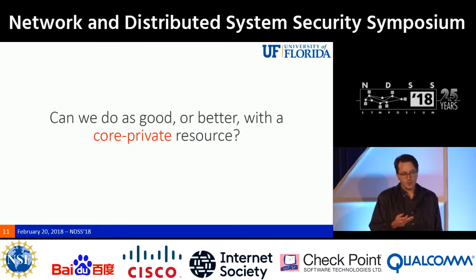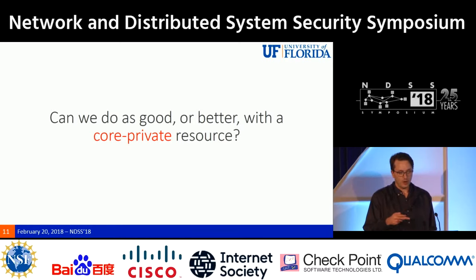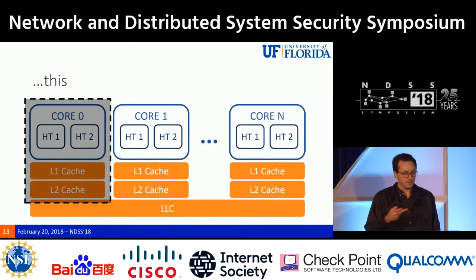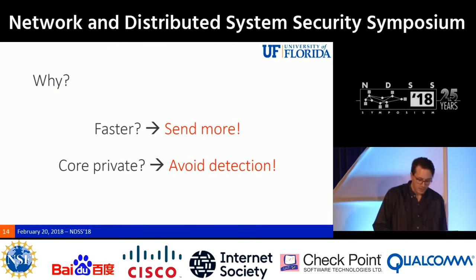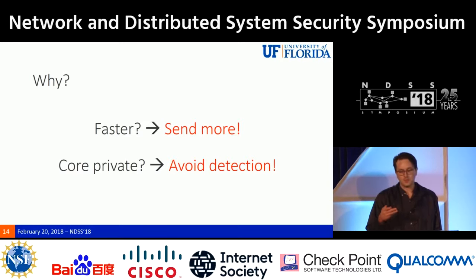We can do better in terms of channel capacity with a core-private resource because we're using a faster clock, and we can do as well with respect to multi-tenant detection in a cross-core scenario. The basic scenario is simple: if we can make our covert channel faster, we can send more data. And if we can make it core-private, we can avoid detection from methods already available on public clouds.